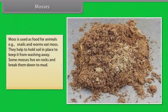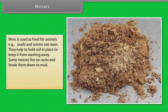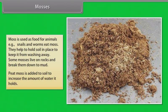Common examples of mosses are funaria, polytrichum and sphagnum. Moss is used as food for animals, that is snails and worms eat moss. They help to hold soil in place to keep it from washing away. Some mosses live on rocks and break them down to mud. Peat moss is added to soil to increase the amount of water it holds.